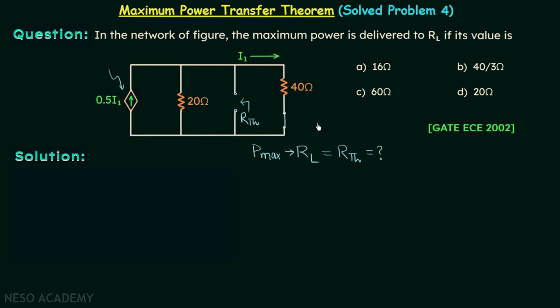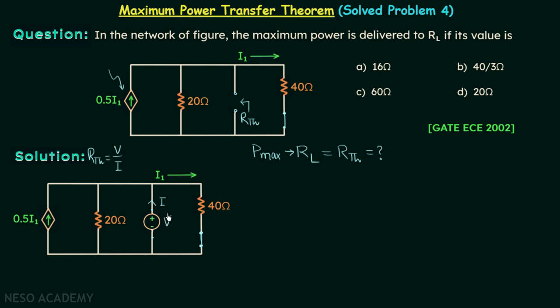We know while calculating Rth, if a dependent source is involved, we add one voltage source or current source between the two terminals. Let us say V is the voltage provided by the source and I is the current leaving the positive terminal of this added source. The resistance across this voltage source is V/I, which is Rth. So we can have Rth if we can find V/I. We will shift our focus to calculating V/I.